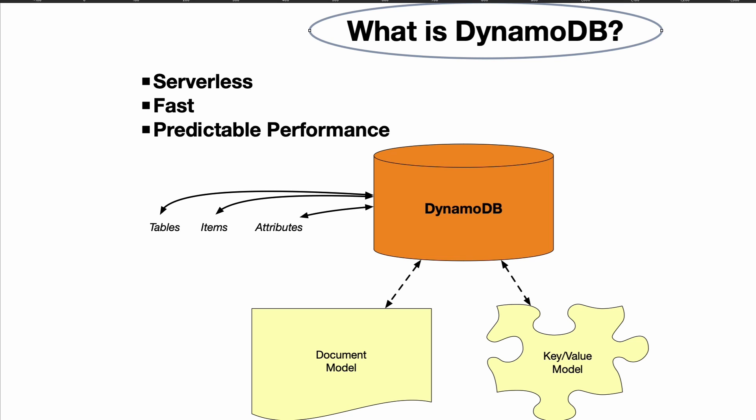DynamoDB stores data in partitions. A partition is an allocation of storage for a table. The partitions automatically scale up or down as the data storage needs change, which makes it a very fast performance system.